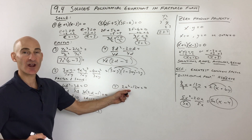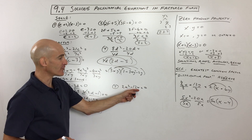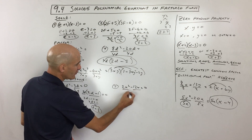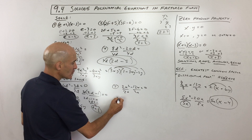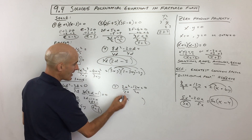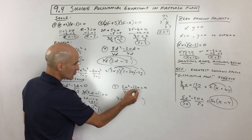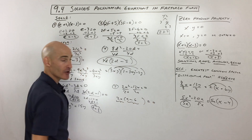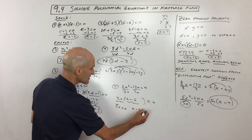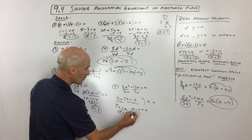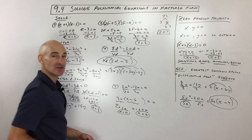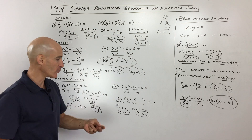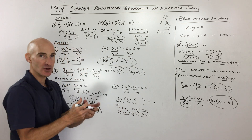Let's try number 7: 2x squared minus 12x equals zero. Factor it first — both terms are divisible by 2 and have at least one x. Factoring out 2x: 2x divided by 2 gives x, and 12 divided by 2 is 6 with x's canceling. So it's 2x times (x minus 6) equals zero. Setting each factor to zero: 2x equals zero gives x equals zero; x minus 6 equals zero gives x equals 6. Remember, in math 'or' means union — both answers together.